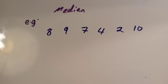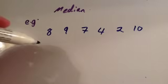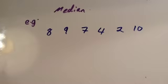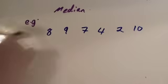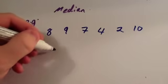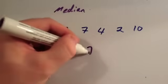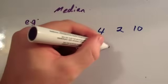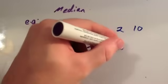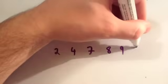Let's look at another example. We'll work out the median for this set of numbers: 8, 9, 7, 4, 2, and 10. Again, the first thing is to arrange them in numerical order. The smallest is 2, next value is 4, next is 7, next is 8, next is 9, and the largest is 10.